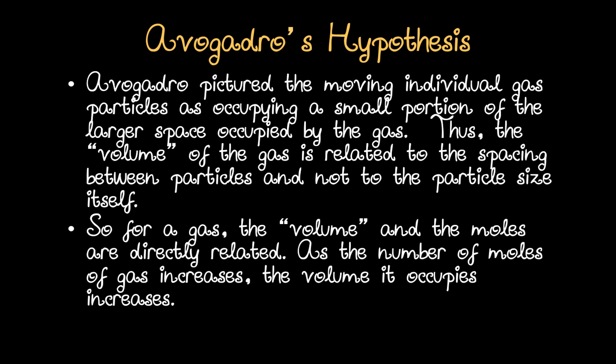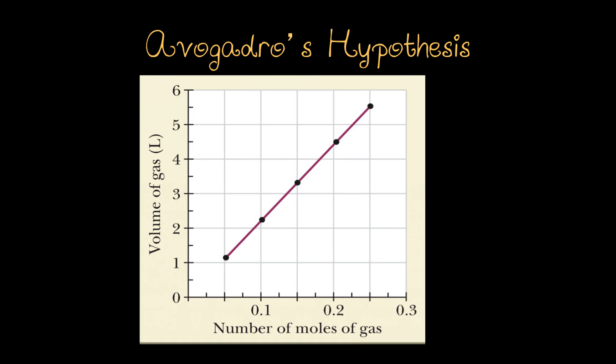So for a gas, the volume and the number of moles are directly related. As the number of moles of a gas increases, the volume it occupies increases. This graph represents the relationship between number of moles of gas and the volume occupied by the gas at constant temperature and pressure — it is a direct relationship. As the number of moles increases, the volume occupied by the gas increases.